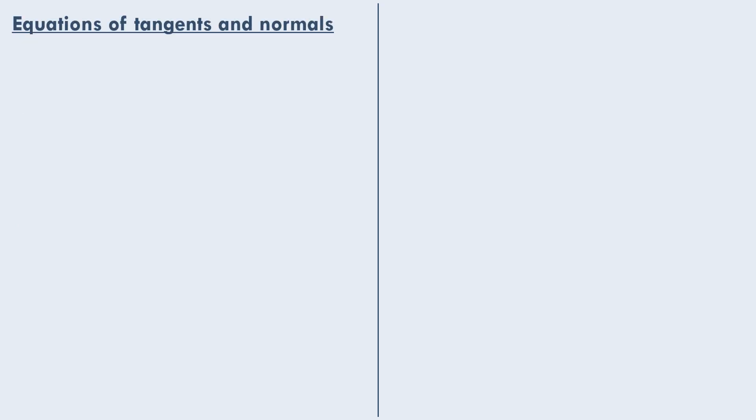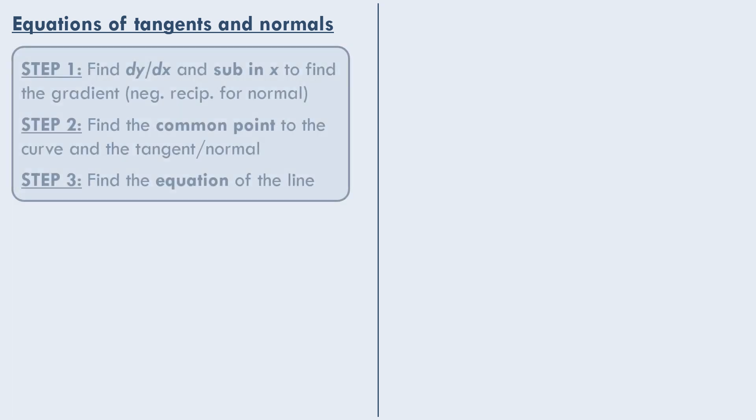Next we have the equations of tangents and normals. Your three steps here are to find dy by dx first, and then sub in the value of x in the question to find the gradient at that point. Step two is to find the common point to the curve and the tangent or the normal. And then step three is to find the equation of the line.